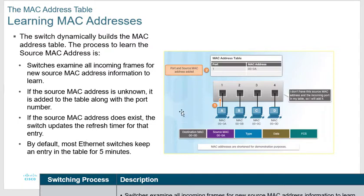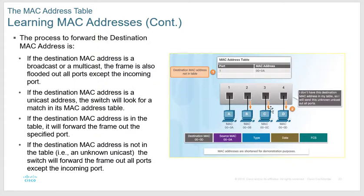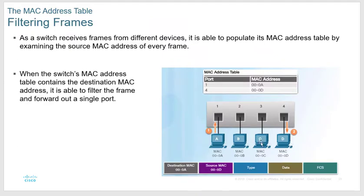When everything first turns on, the CAM is completely blank. When A sends something, it comes out ports 2, 3, and 4. When D sends back, that MAC address is recorded, and from that point A and D communicate only through their specific ports. This is also why broadcasts are bad: anytime a broadcast hits a switch, the switch sends it out all other ports. On a 48-port switch a broadcast on port 1 goes out all 47 other ports.